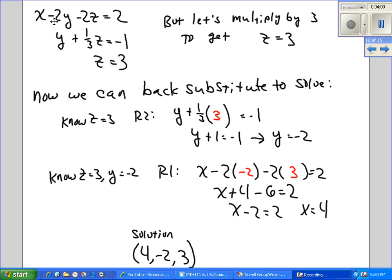So now I've got x and a bunch of stuff equals 2, y and some stuff equals negative 1, and z equals 3. So I know z equals 3. Now I can back substitute to solve. Since z equals 3, if I go to row 2 which only had y and z, let z equal 3 in row 2, and then I can solve for y. Now I know what z is and what y is. Now I can go to row 1, put in my value for y, put in my value for z, and then I can solve for x.